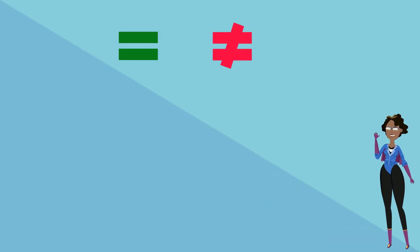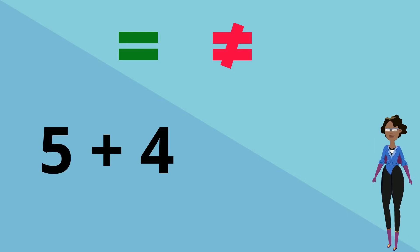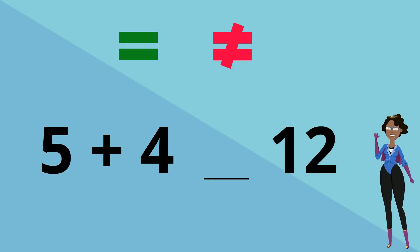Let's do some examples and use our equal and unequal signs. So 5 plus 4, is that equal or unequal to 12? What sign should go in the middle? Well 5 added to 4 gives us 9. Is 9 equal to 12? No, so the sign that should go in the middle is the unequal sign.